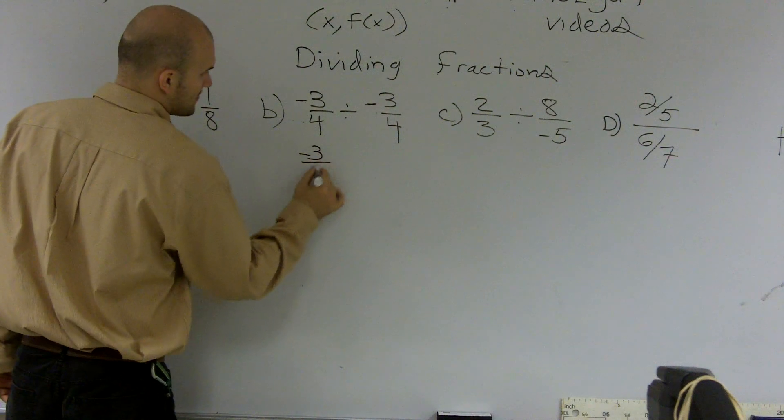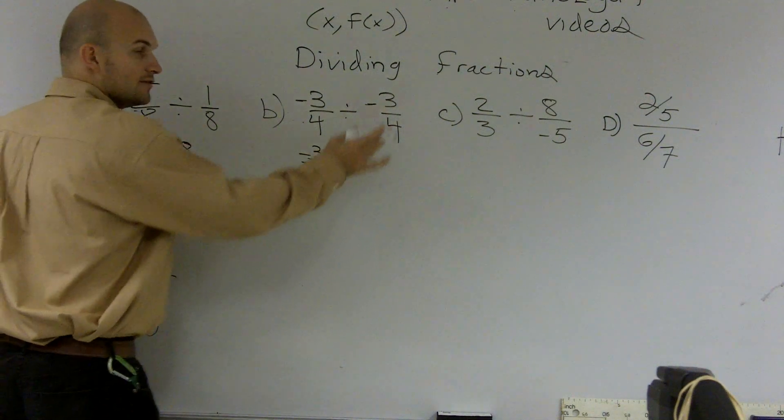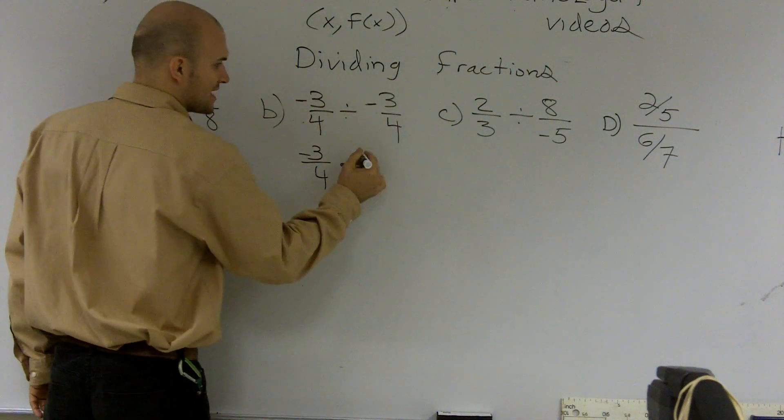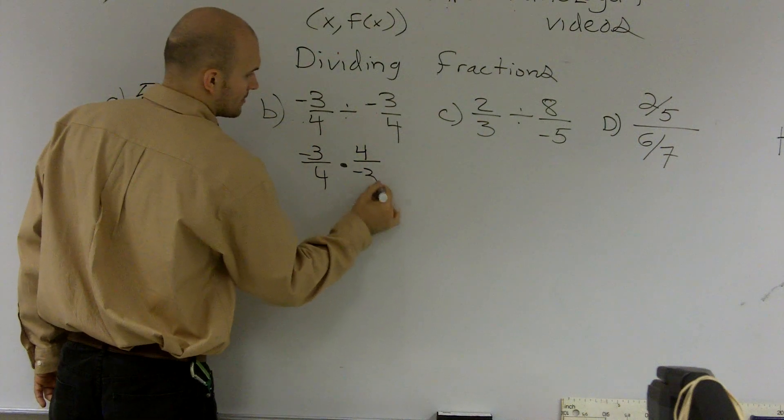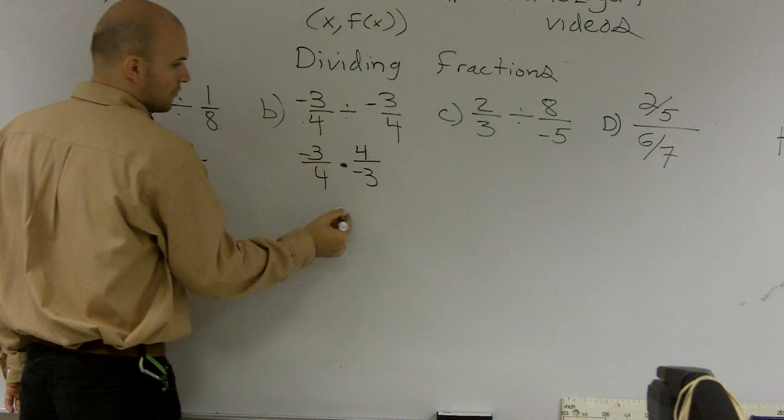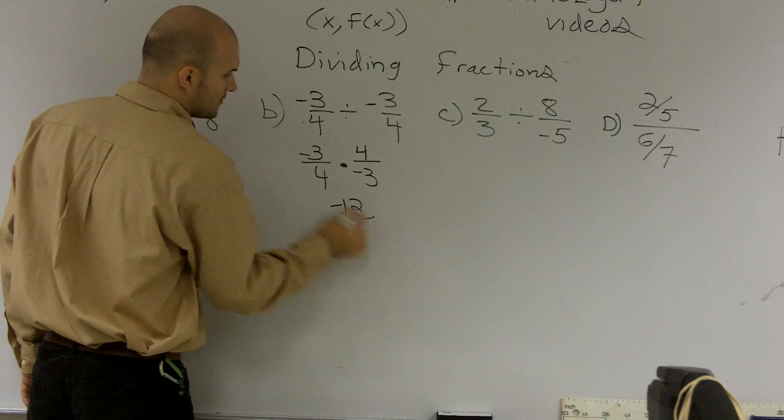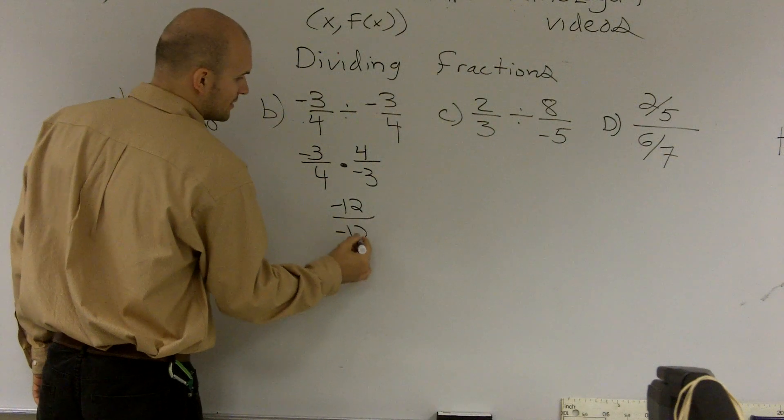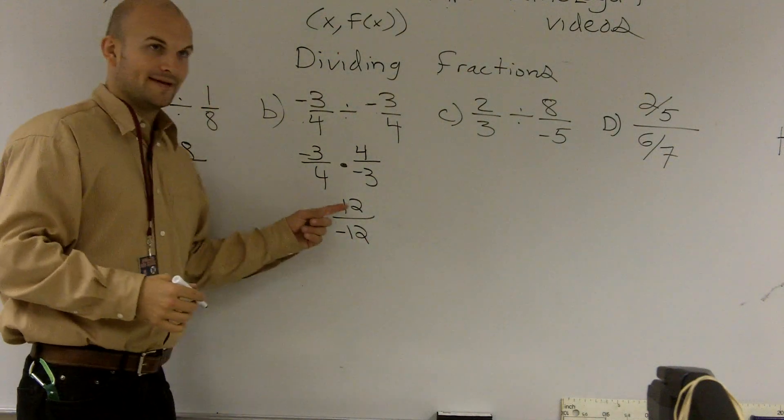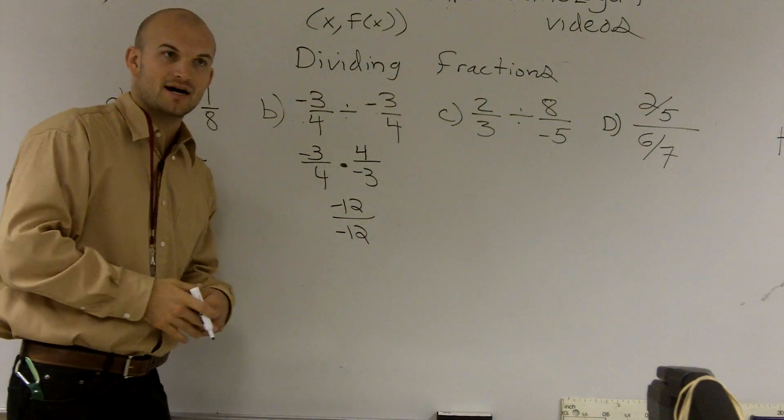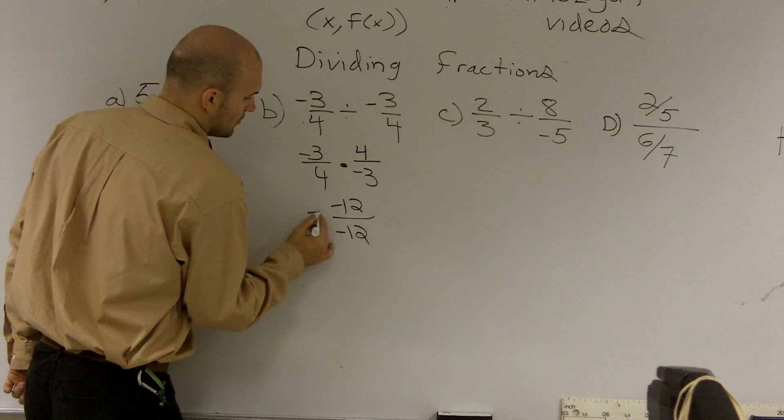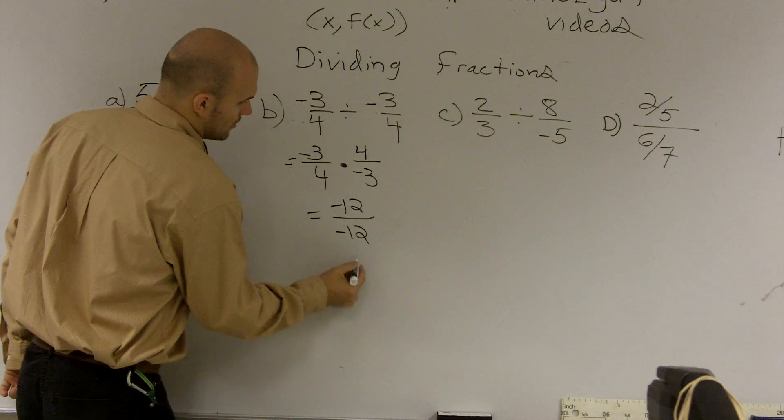So I have -3/4 multiplied by, flip the second fraction, -3 times 4, -12. 4 times -3 is -12. -12 divided by -12 is positive 1.